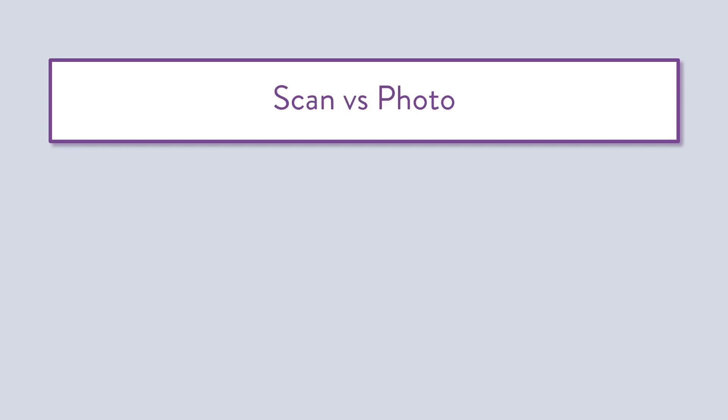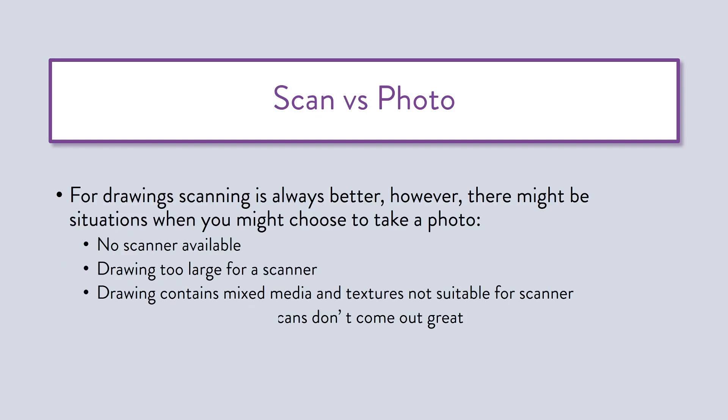First of all, ideally if you have a scanner available to use, I would always suggest using a scanner versus a camera because you don't distort the lines by using a wrong camera angle. It lights up really clearly, so you don't get any weird shadows, and you will almost always have a good quality result when you scan a drawing.